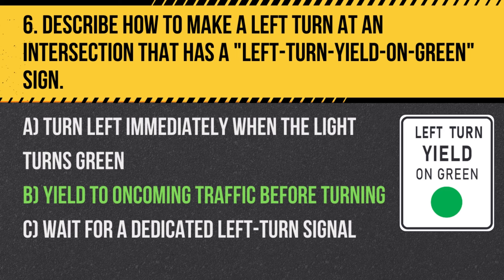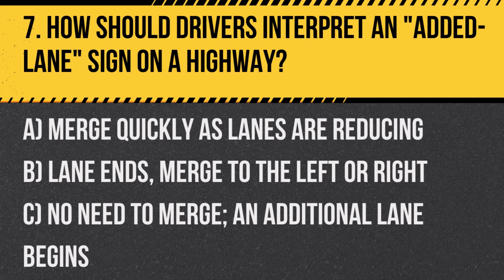Question 7: How should drivers interpret an added lane sign on a highway? A. Merge quickly as lanes are reducing. B. Lane ends, merge to the left or right. C. No need to merge, an additional lane begins. Answer: C. No need to merge, an additional lane begins. An added lane sign indicates a new lane is added to the roadway. Merging is not required.